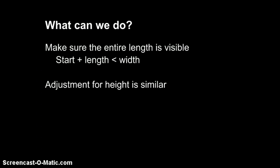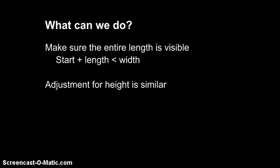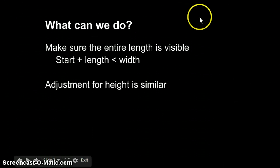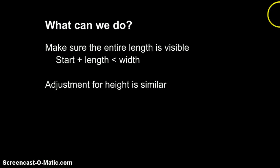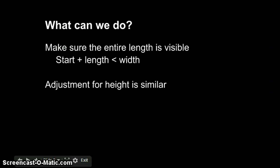The issue is that part of the text is going off the screen, so what can we do to prevent this? We need to make sure that the starting position of the string plus the length of the string doesn't exceed the width of the canvas. If the length goes off the screen, we want to start further back so that the endpoint is within the boundary rather than being off the screen.